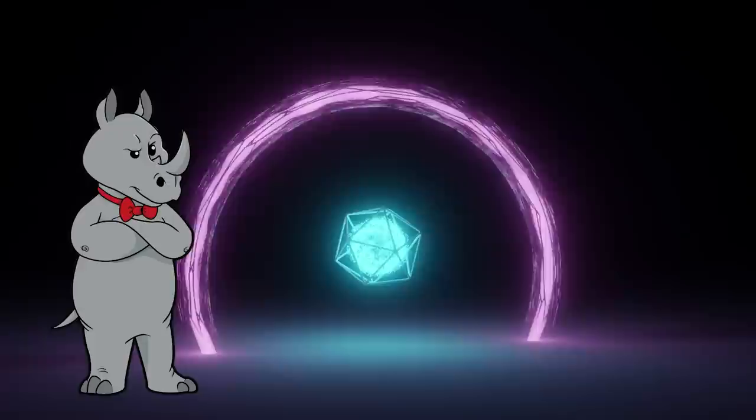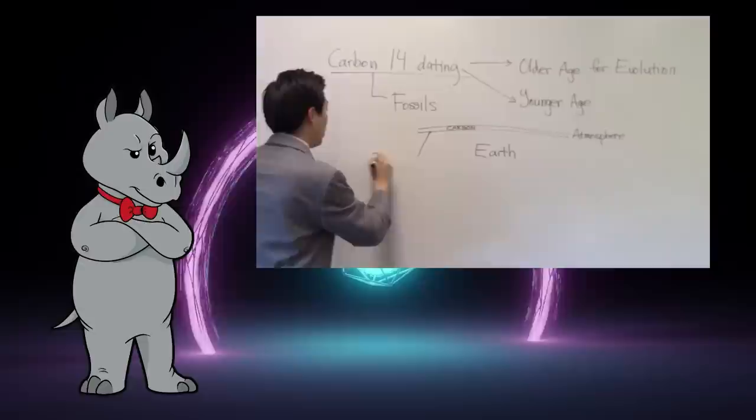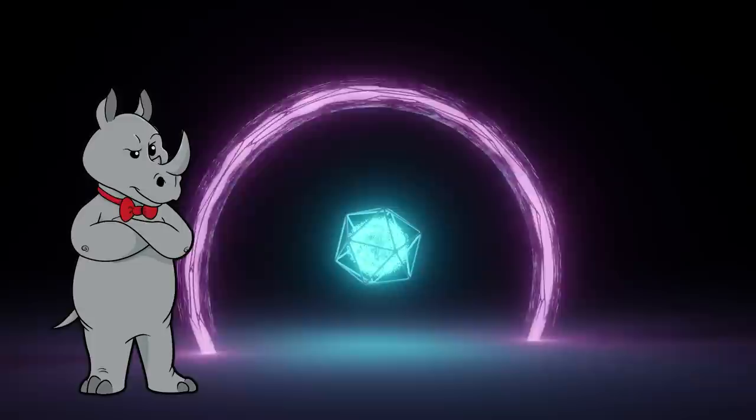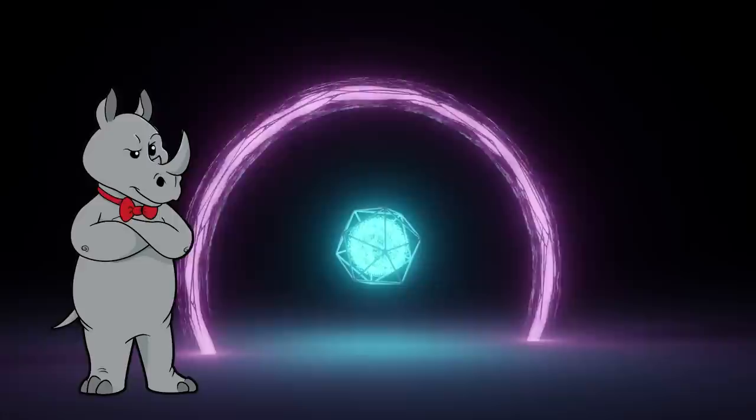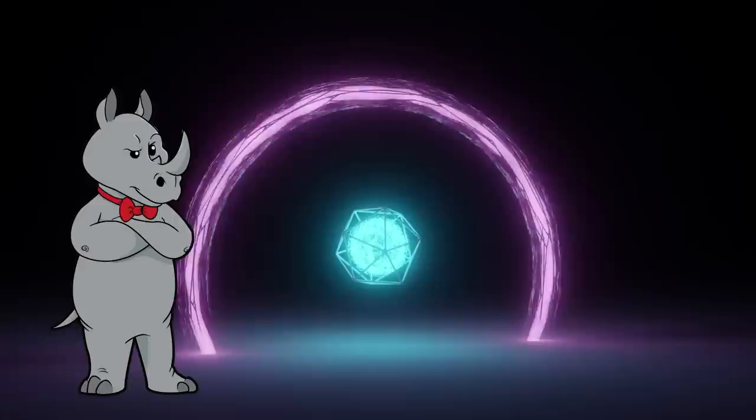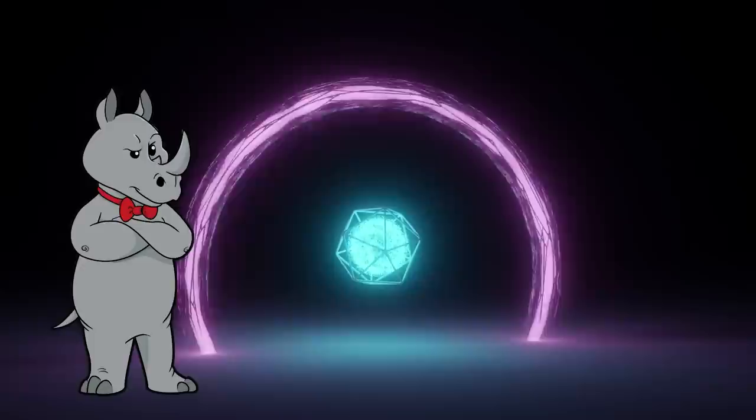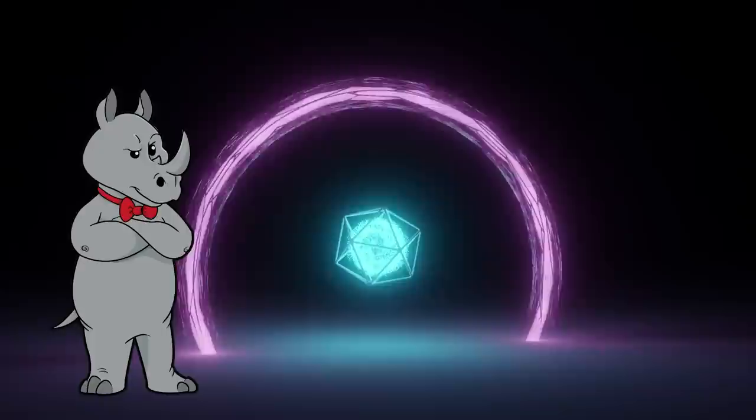He says that if we were to go for somewhere between 20 to 30,000 years, we would reach equilibrium here in carbon. I think you misunderstood the point, buddy. It's not about equilibrium. In fact, one of the creationist's objections to carbon dating is the idea that it assumes that the Earth is already at an equilibrium point, which is a false assumption. But not a Dr. Kim is unique among creationists, so let's see where he's going.